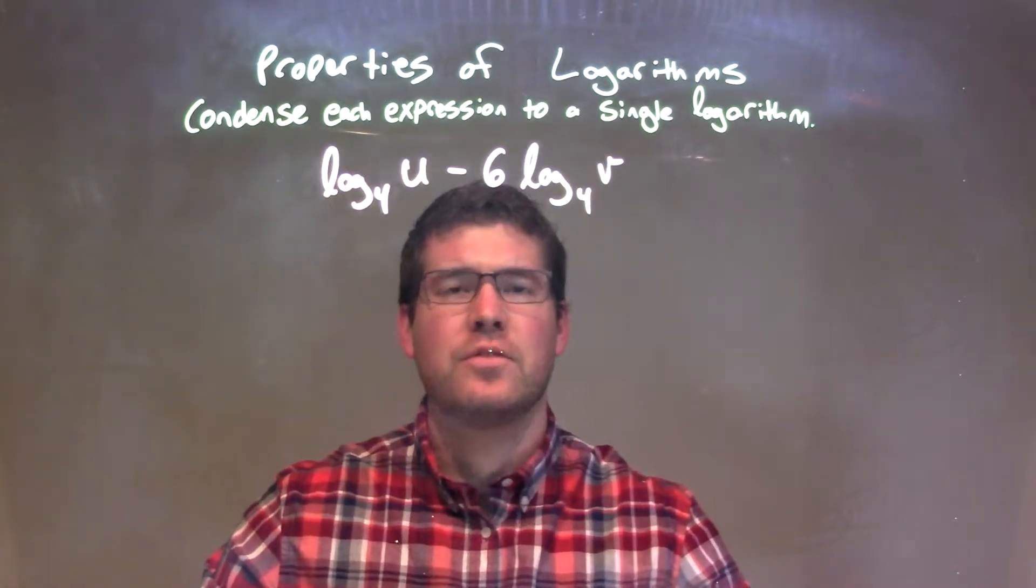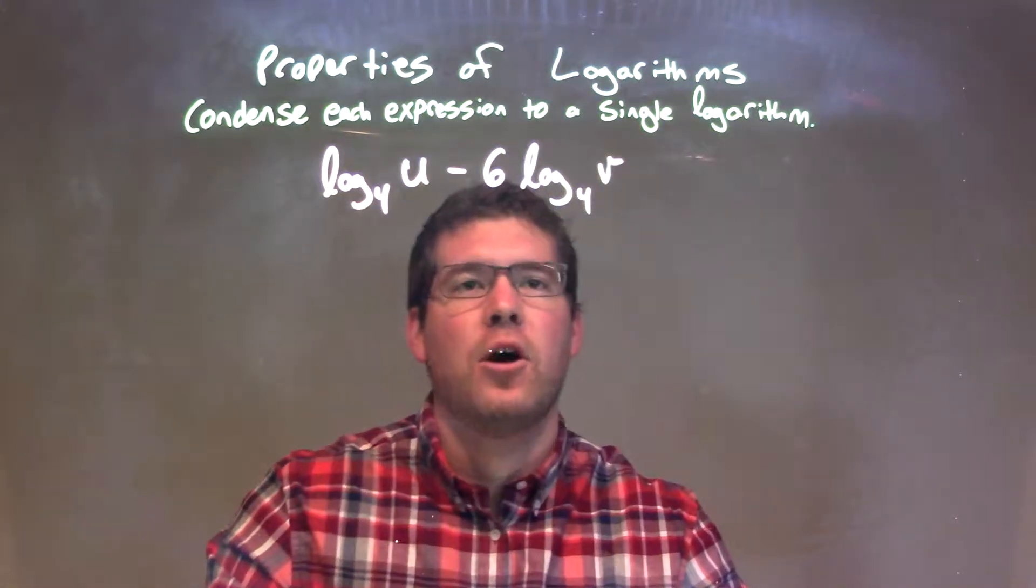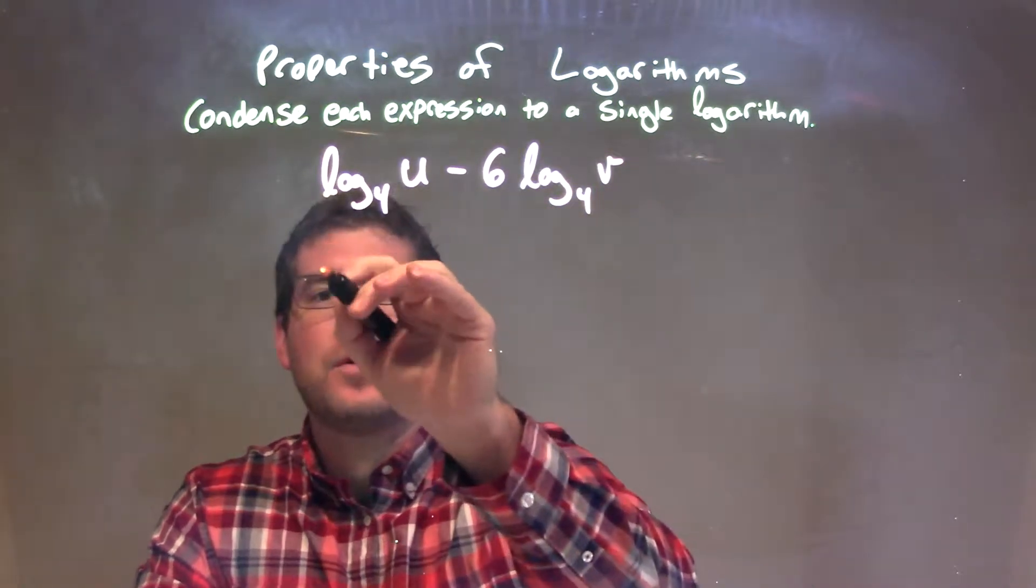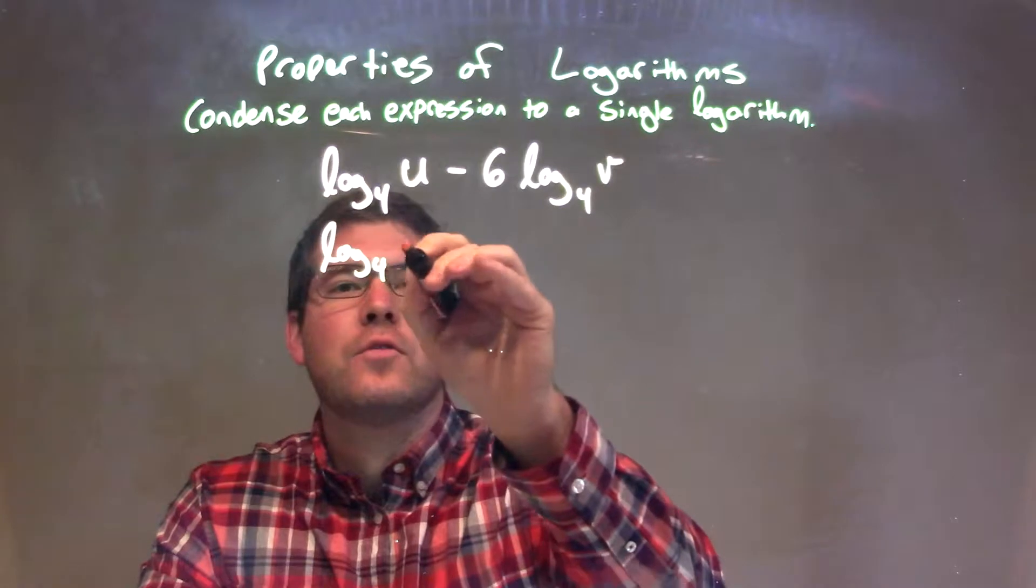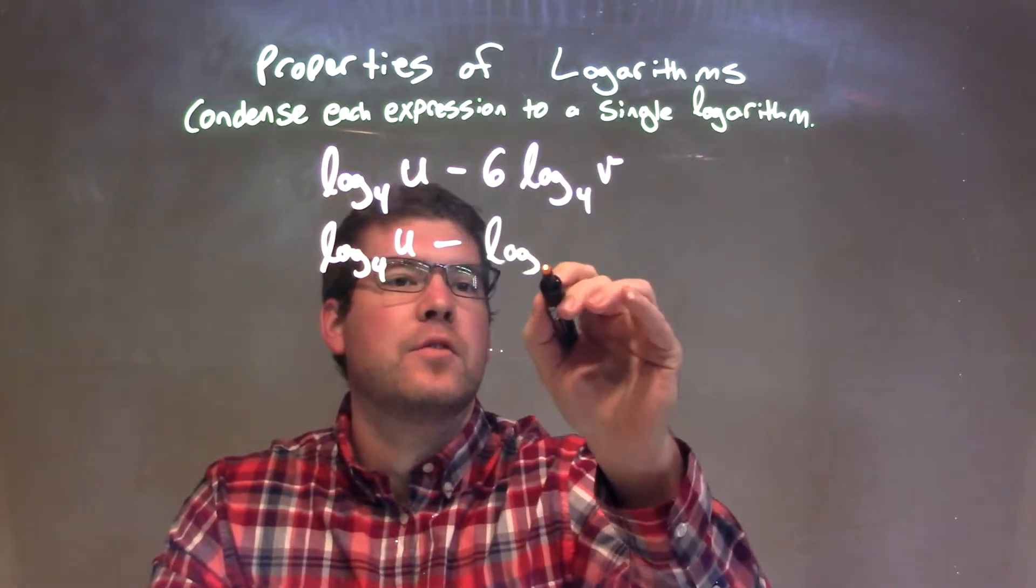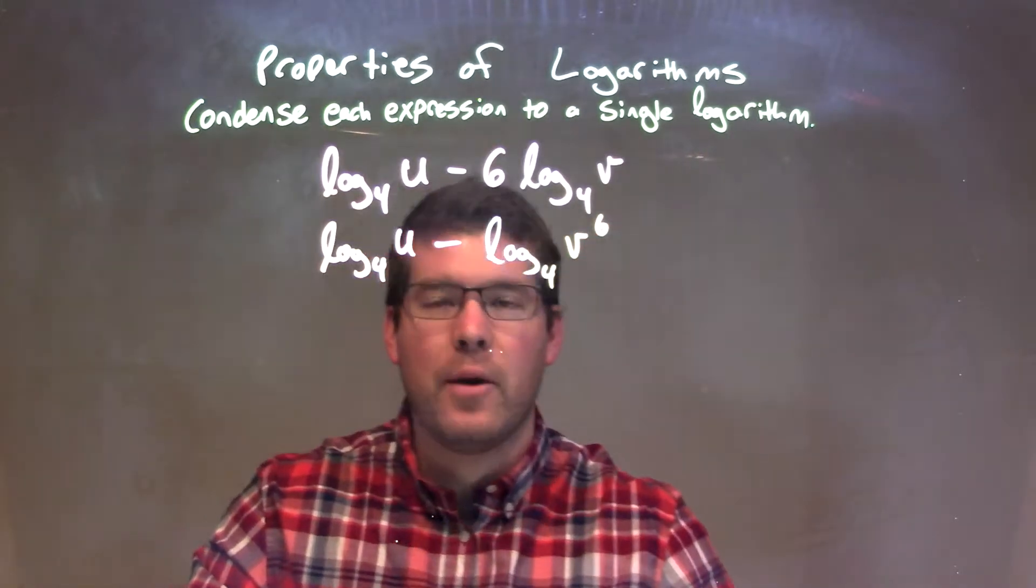Well, if you want to condense this, I'm looking at that 6 that's in front of the log base 4 of v. I'm going to write that as the power of the v. So, we have log base 4 of u minus log base 4 of v to the 6th power.